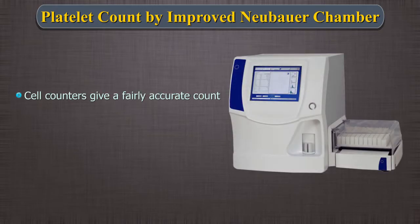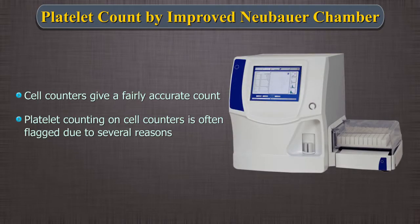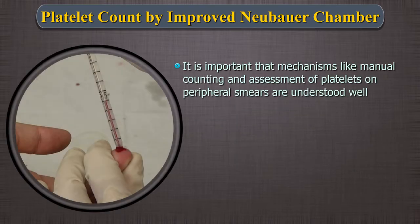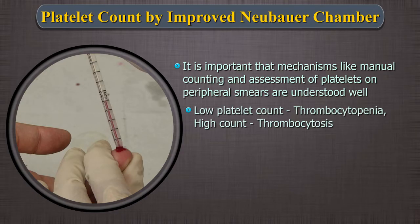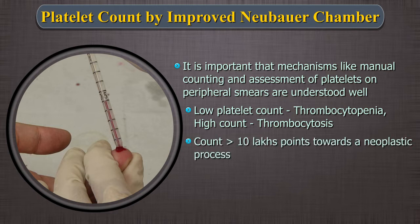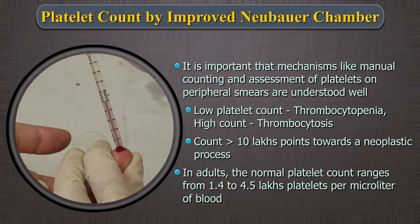Cell counters nowadays give a fairly accurate count. However, platelet counting on cell counters is often flagged due to several reasons. Thus, it is important that mechanisms like manual counting and assessment of platelets on peripheral smears are understood well and the skills for such obtained. A low platelet count is called thrombocytopenia and a high count thrombocytosis. A count greater than 10 lakhs points towards a neoplastic process in most cases. In adults, the normal platelet count ranges from 1.4 to 4.5 lakhs platelets per microlitre of blood.